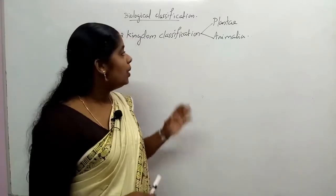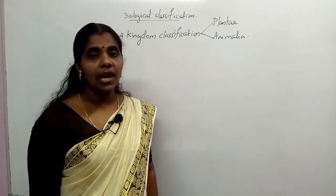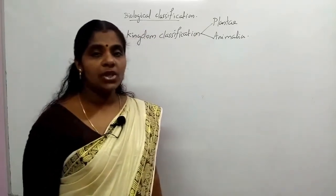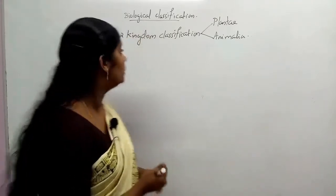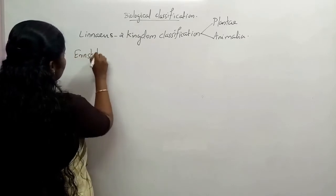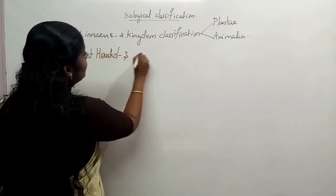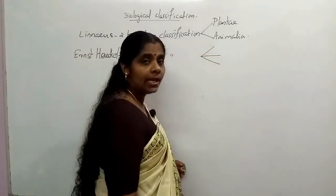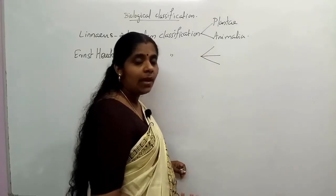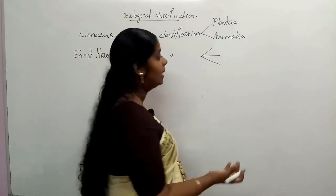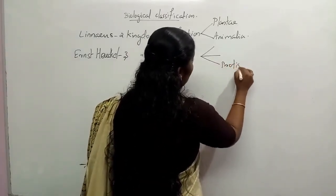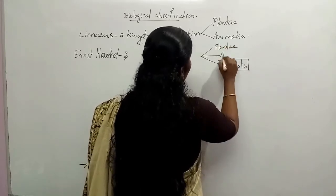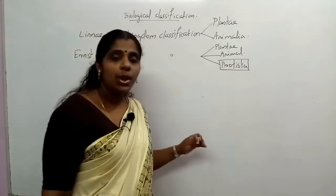In the two kingdom classification, plants and animals were divided, but unicellular microscopic organisms were not adequately placed. The next classification came from the scientist Ernst Haeckel. Ernst Haeckel introduced the three kingdom classification. He introduced a new kingdom — Kingdom Protista — for unicellular organisms.